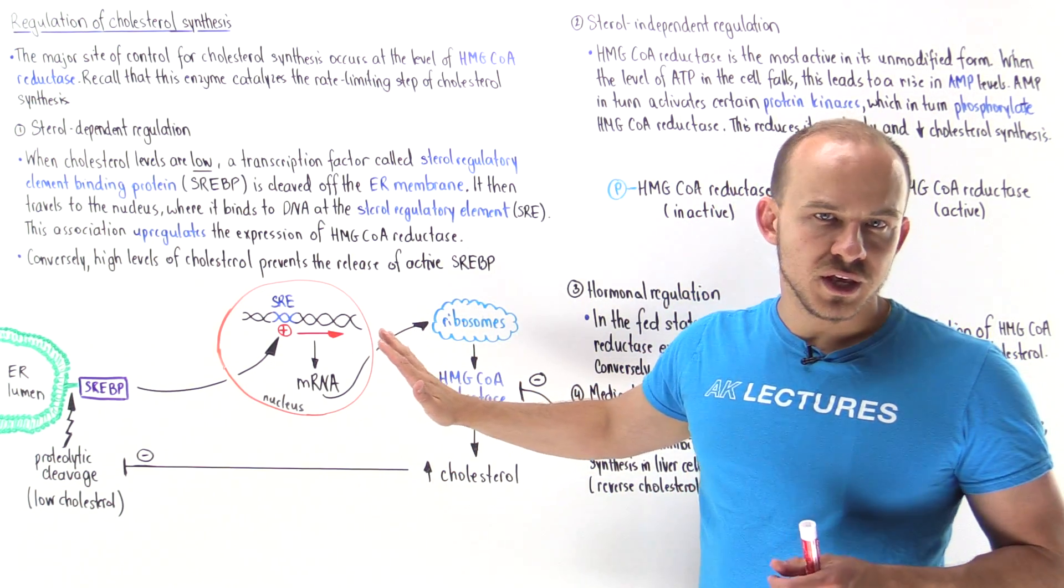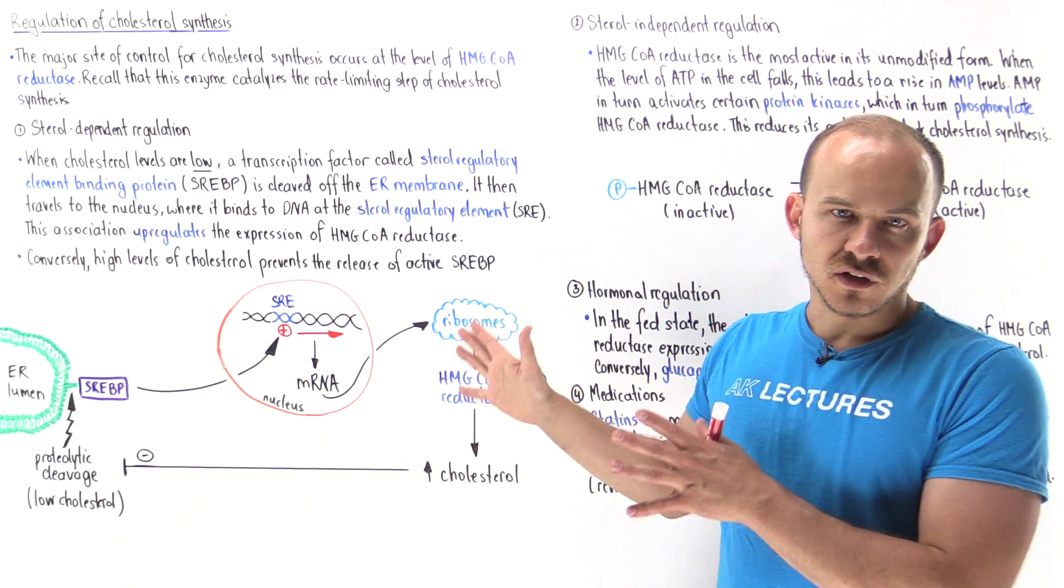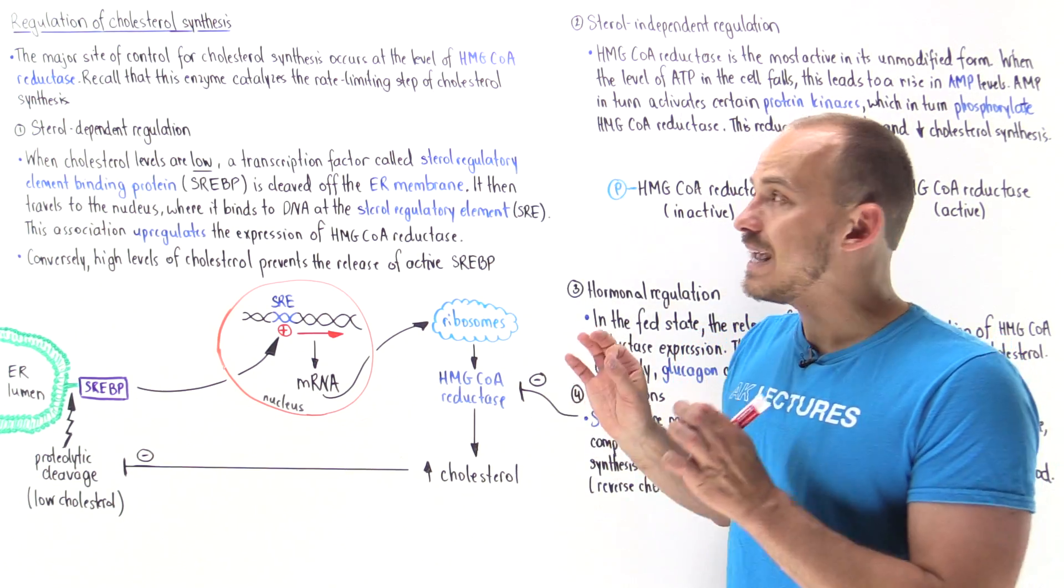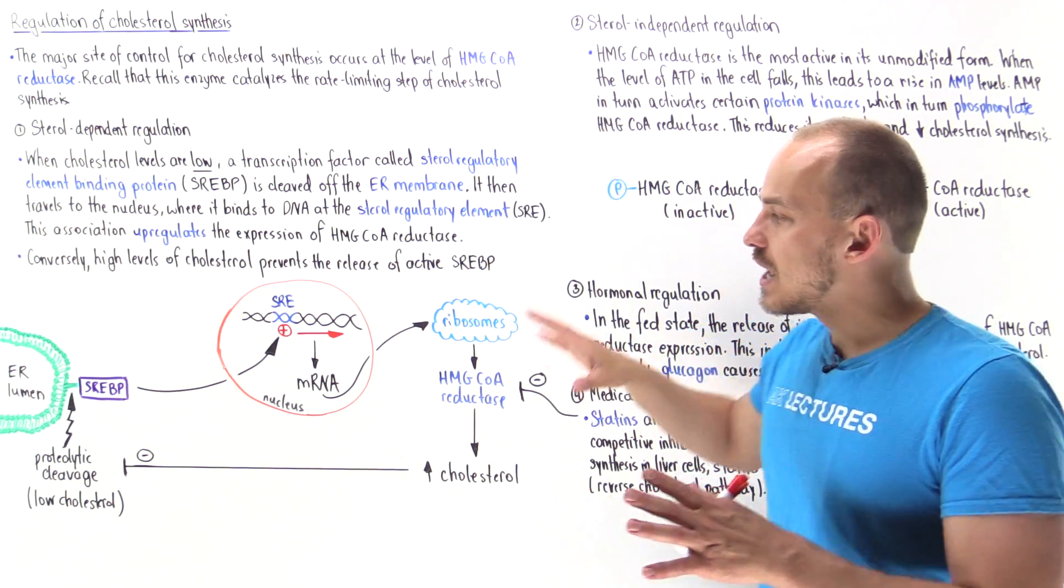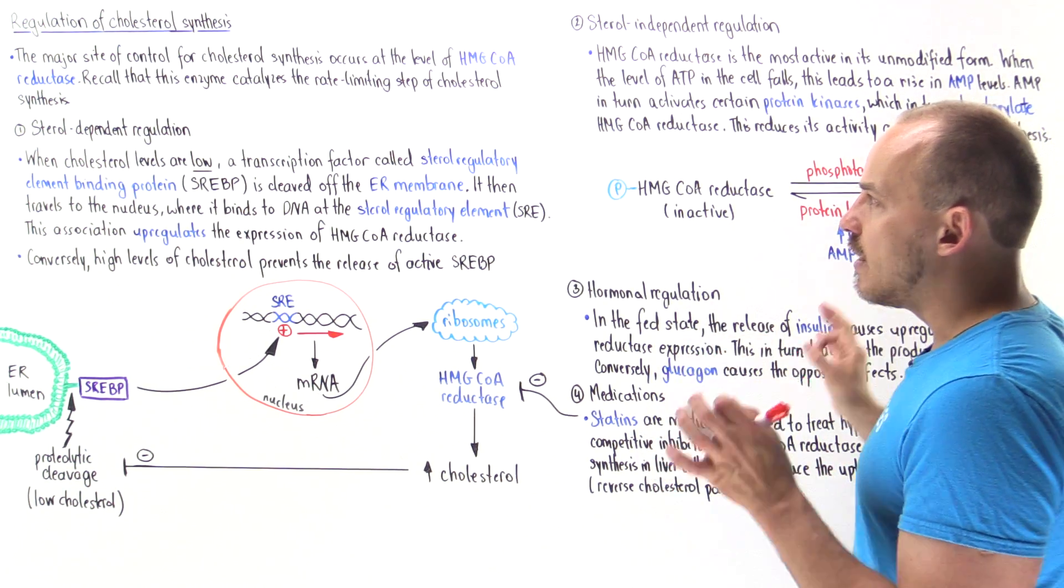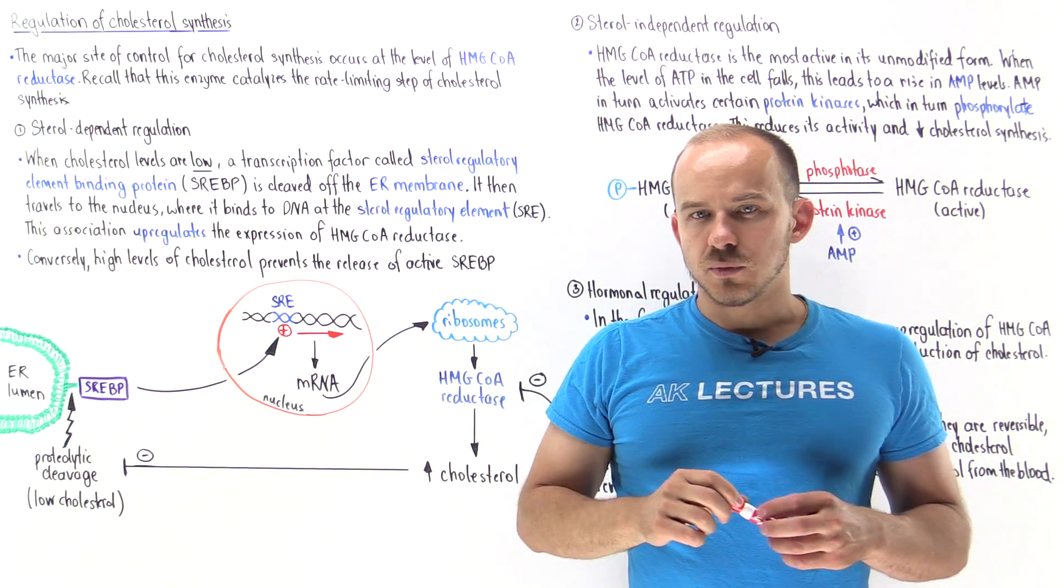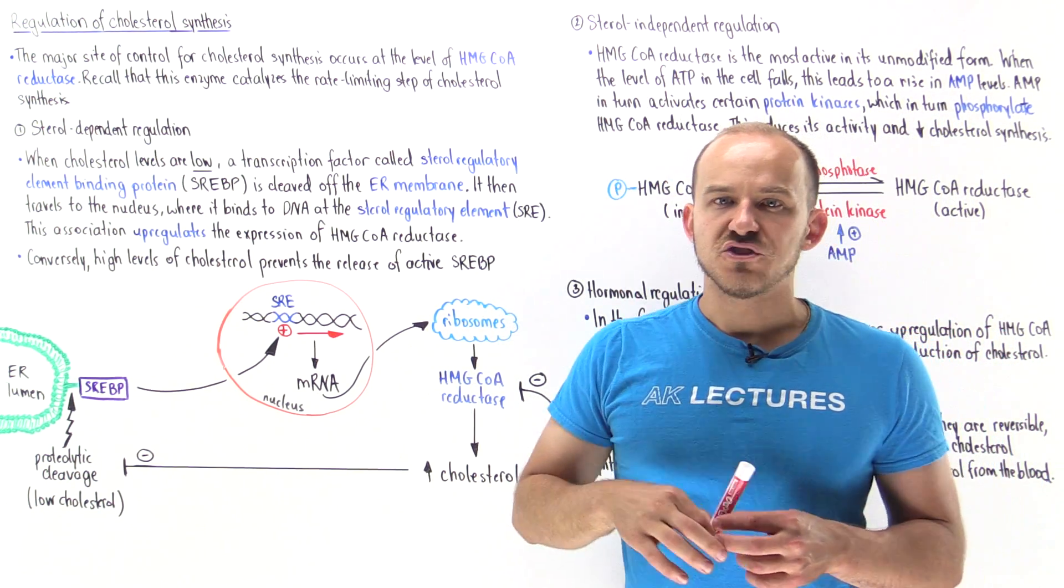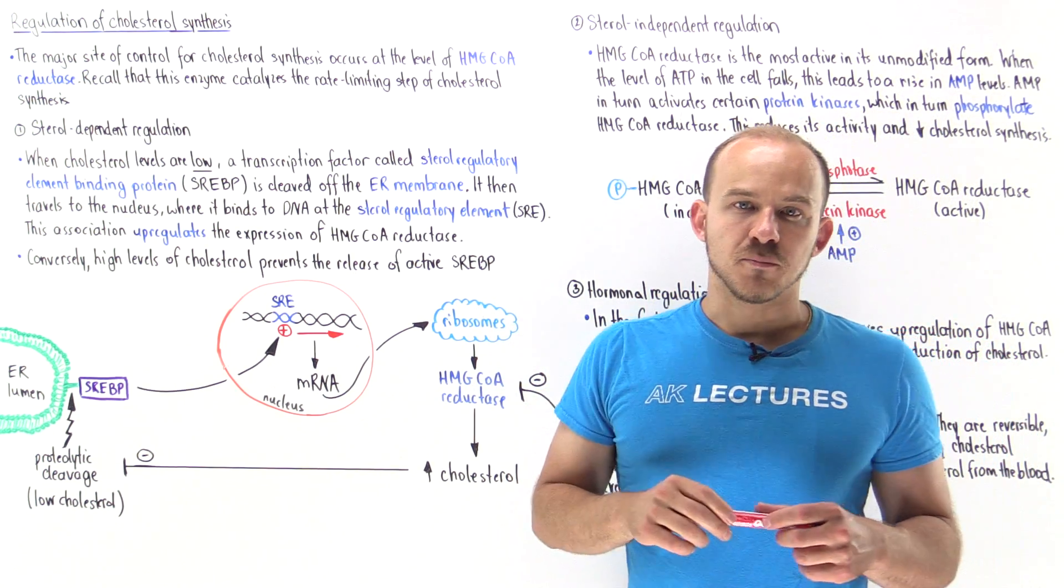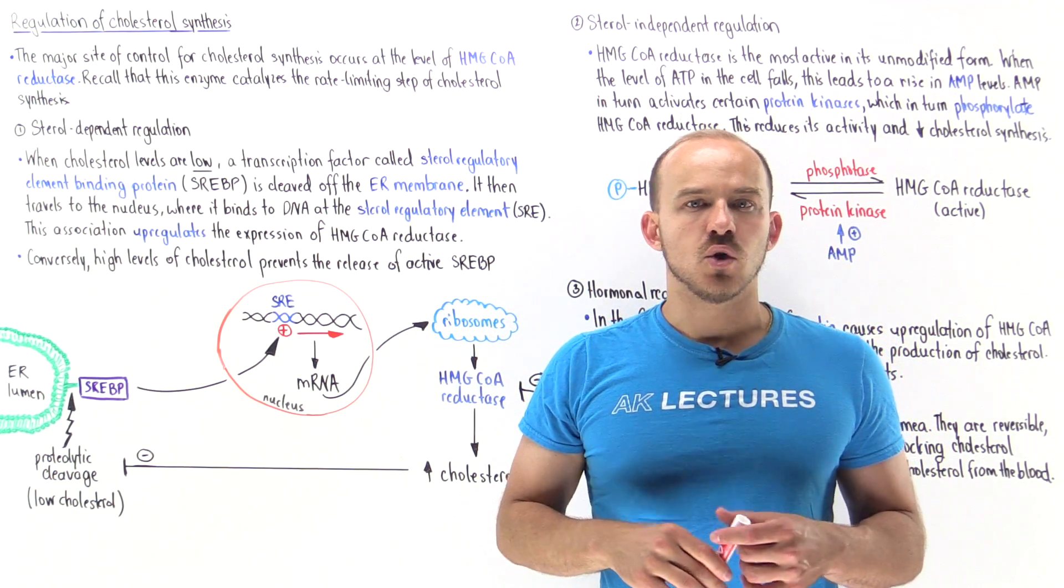The most important thing to take away from this lesson is the regulation of cholesterol synthesis occurs at the level of the rate limiting enzyme HMG-CoA reductase. As we talk about all these different regulatory methods, remember this fact. To increase the production of cholesterol we have to increase the expression of HMG-CoA reductase. To decrease the production of cholesterol we have to decrease the expression of HMG-CoA reductase.